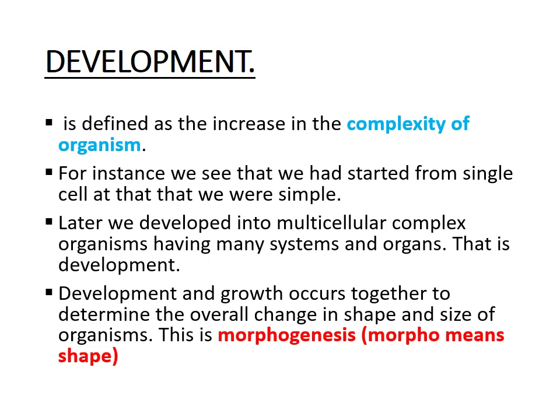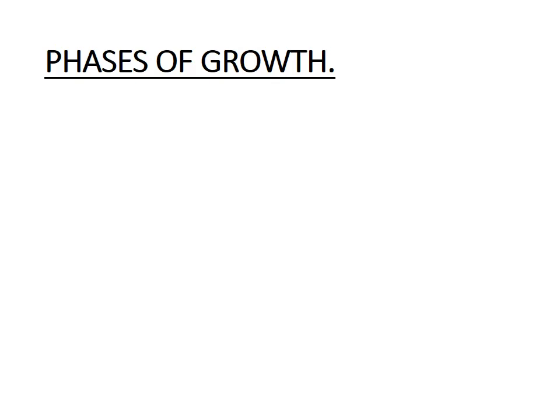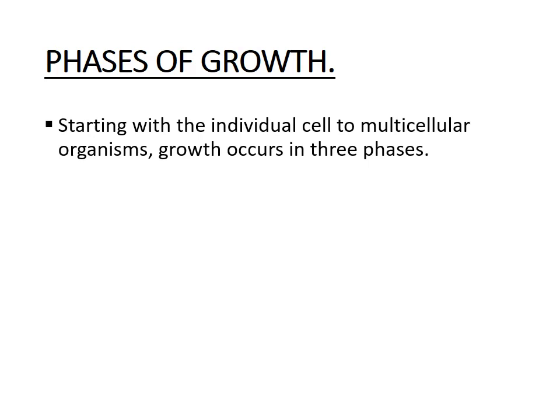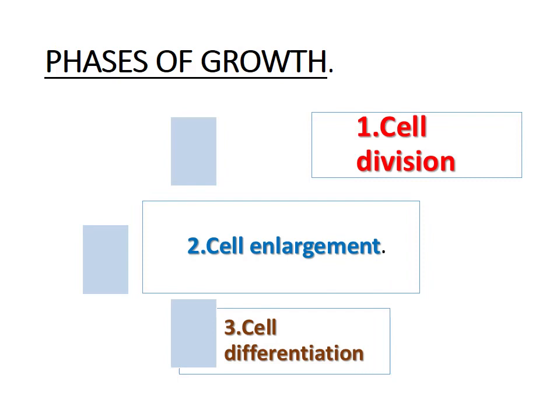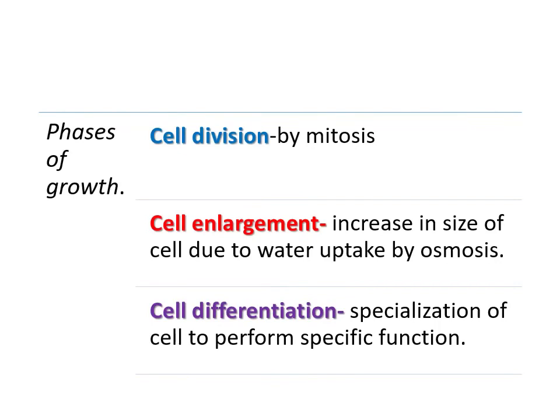We are going to see the phases of growth — the steps that our body takes in order to grow. Starting from the individual cell to a multicellular organism, growth occurs in three phases: cell division, cell enlargement, and cell differentiation.